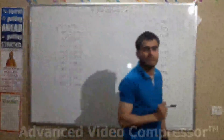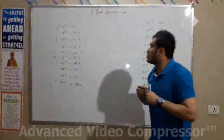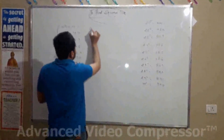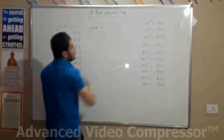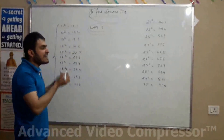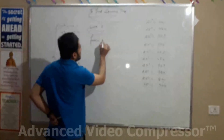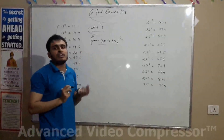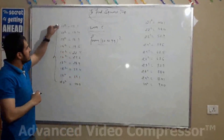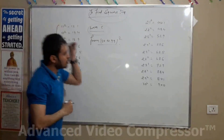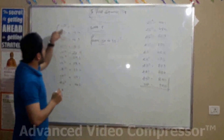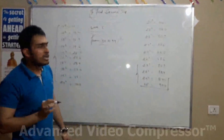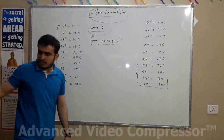Hello friends, here Ayash from Planning Coaching Classes. Today's session is about finding the square of any given number. Within 5 seconds, if you want to find out the square of any given number from 30 to 99, you have to know the squares from 11 to 30. If you know squares from 11 to 30, then it is very easy to find squares from 30 to 99. Let's see how.